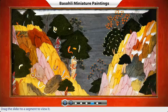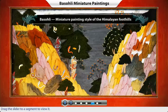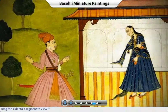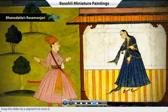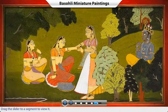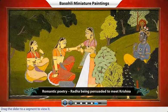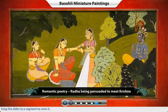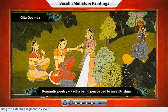In the late 17th century, the art of miniature painting flourished in the Himalayan foothills in a distinctive form known as Basoli. The most powerful composition painted in this style was Bhanudatta's Rasa Manjari, which highlighted the social life of India in the 15th century. Basoli paintings also depicted romantic poetry. In this scene from the Gita Govinda, Radha is being persuaded to meet Krishna.